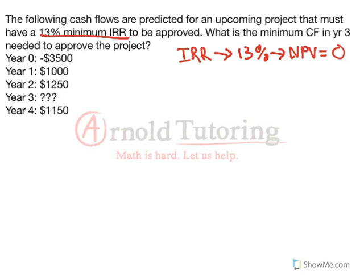We always want to remember that — that's the definition of what internal rate of return is. This is a very practical thing that investors will say: if it's going to earn 13%, at least we can go ahead and do the project. So let's do our regular NPV calculation, set the NPV to 0, and then we should be able to find our unknown year 3 cash flow.